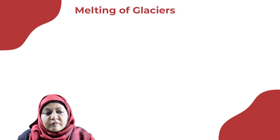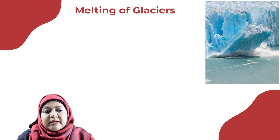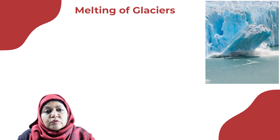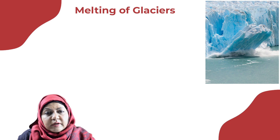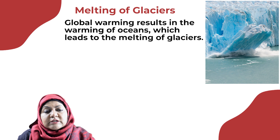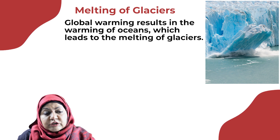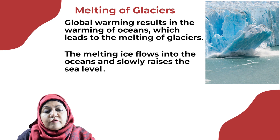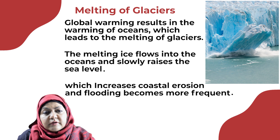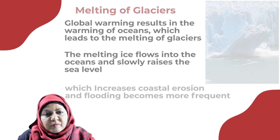Melting of glaciers: since the early 1900s, many glaciers have been melting very rapidly due to human activity. Global warming results in the warming of oceans, which leads to the melting of glaciers. The melting ice flows into the oceans, raises the sea level, and increases coastal erosion, making flooding more frequent.